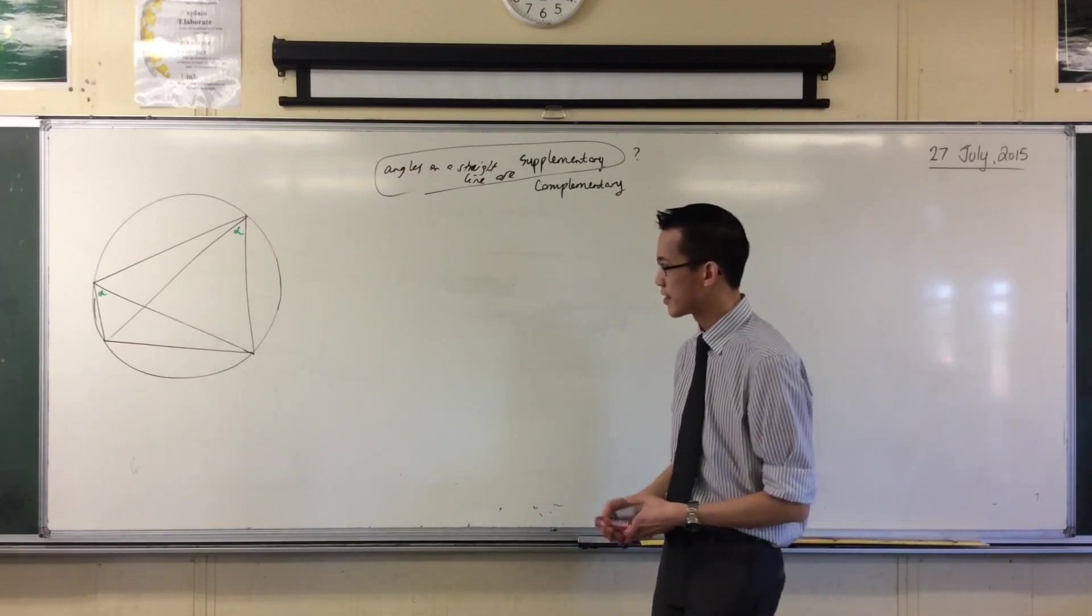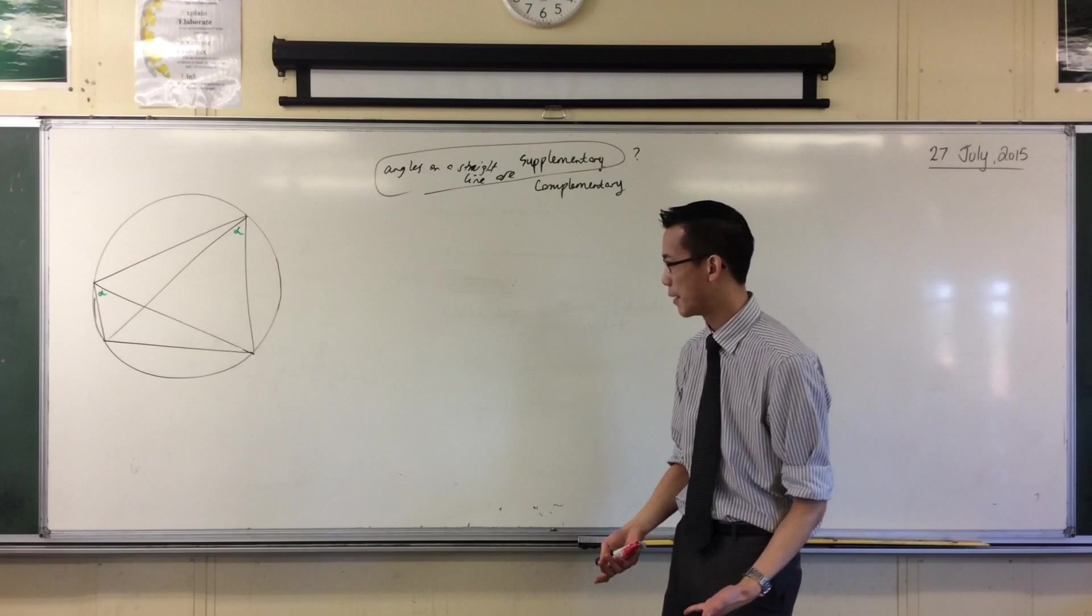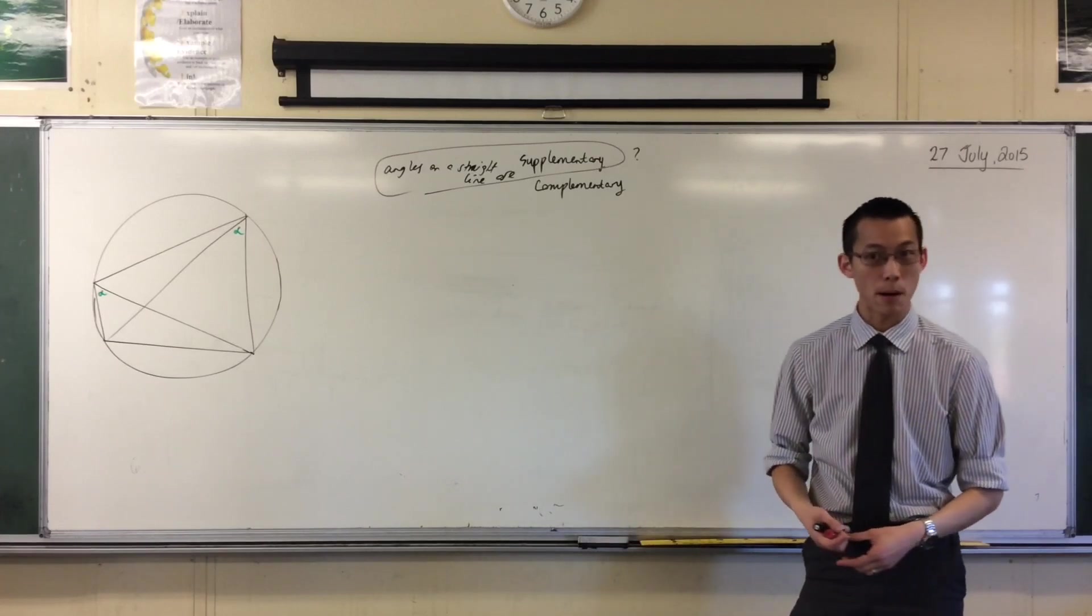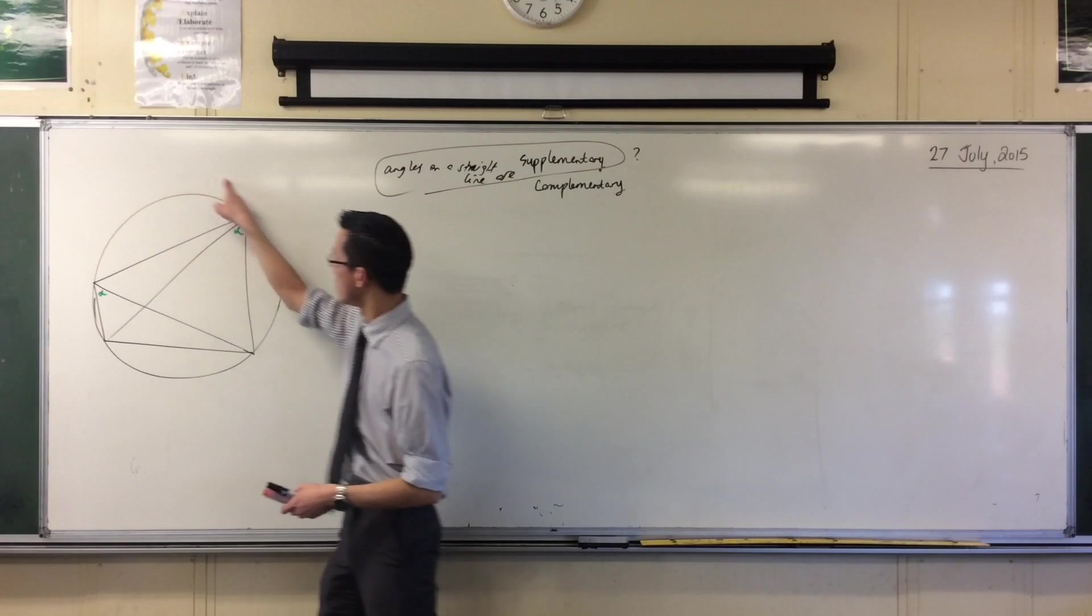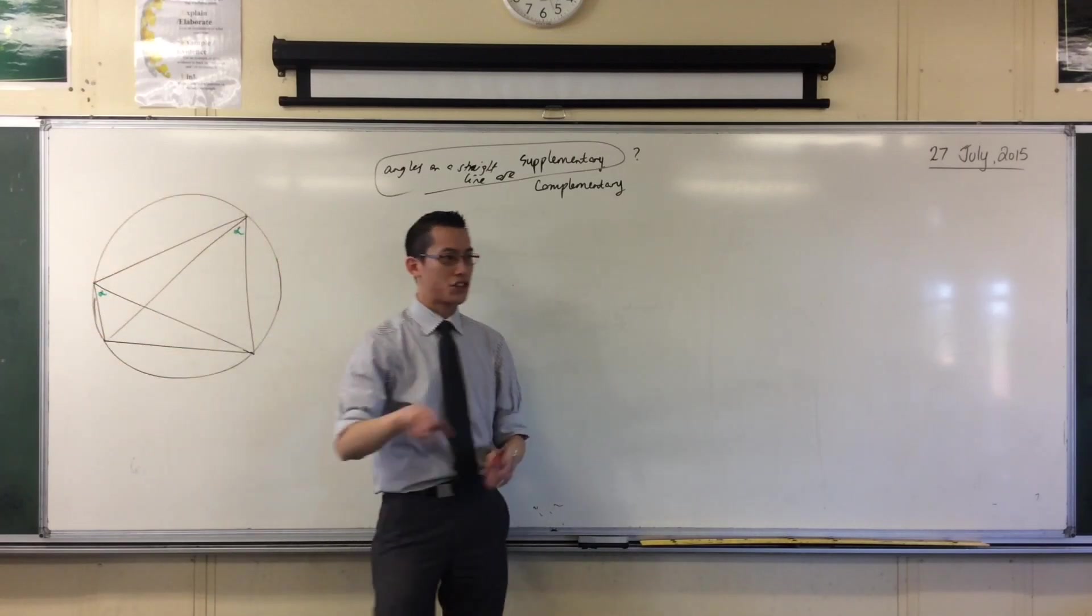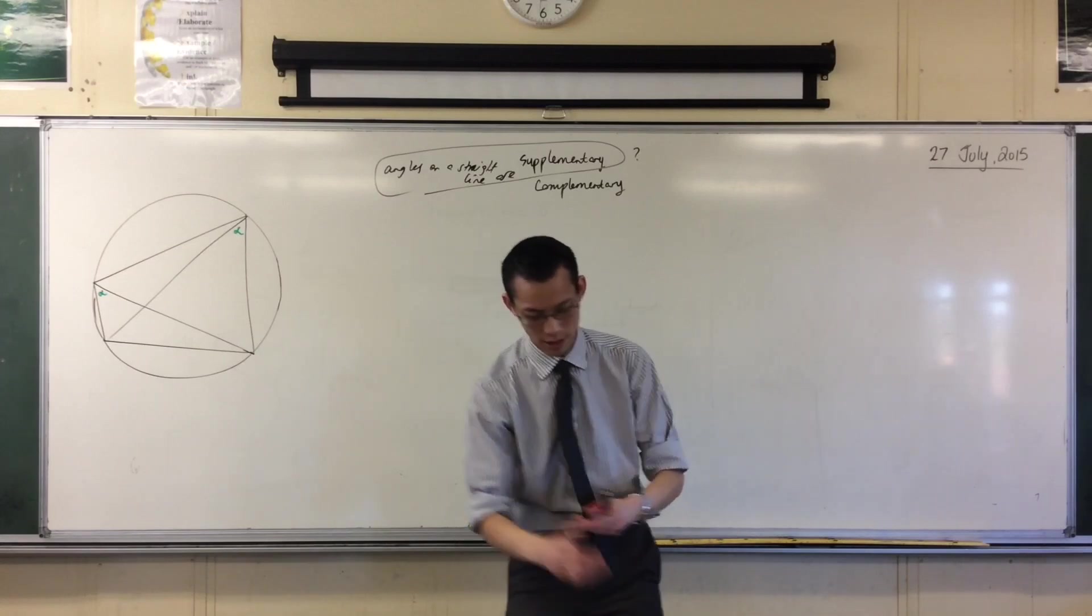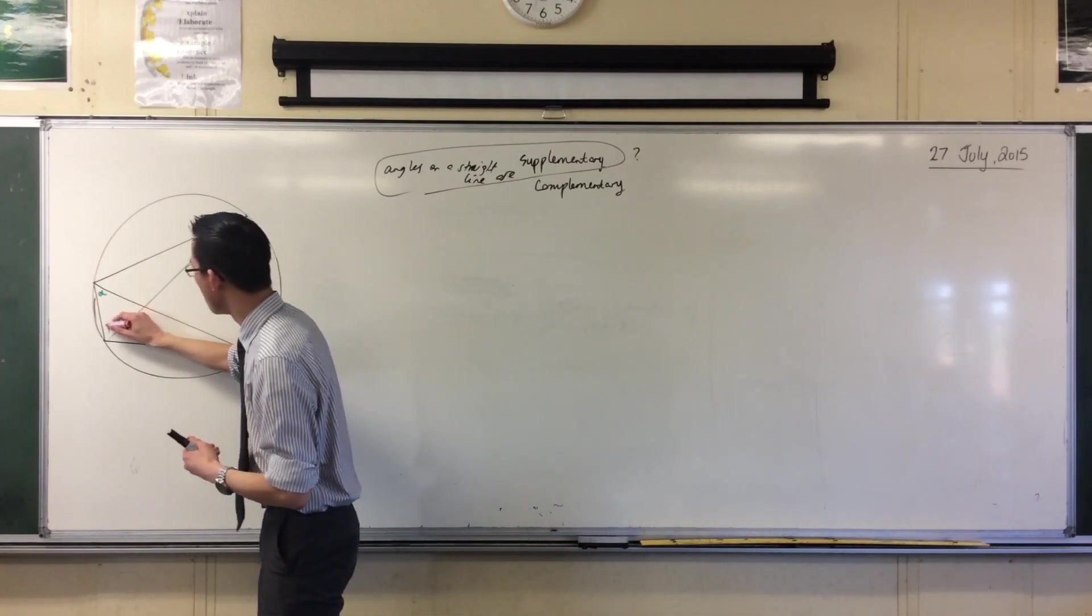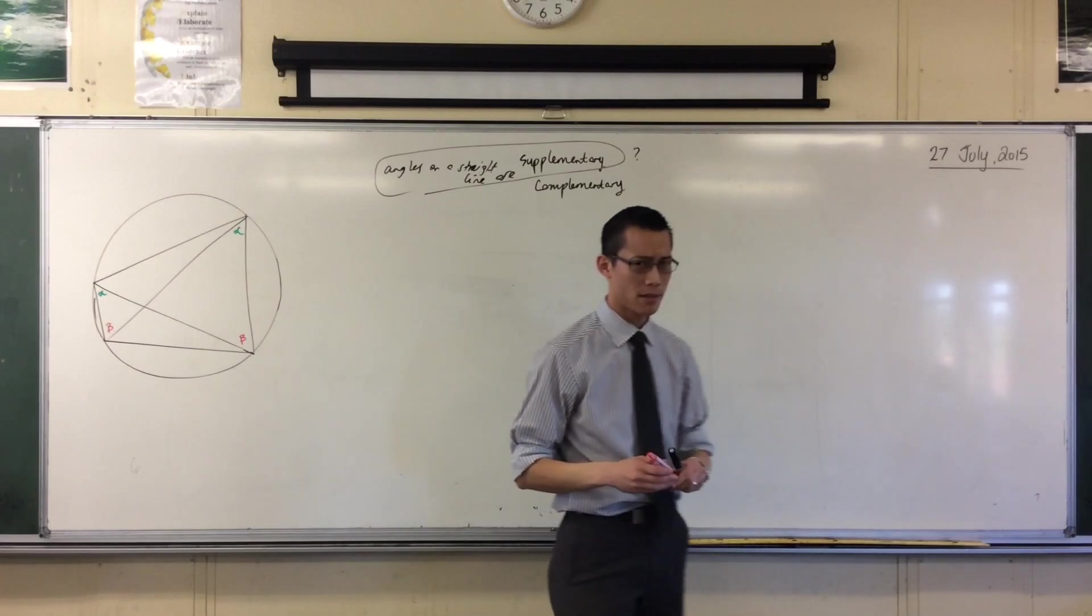Now, once you see that that's alpha and alpha, that doesn't get you very far, but there's loads of other pairs that are exactly the same. For example, if you look at the diagram upside down, and you see okay there's another arc up here, this top arc, which subtends two angles at the bottom, right? Do you see them? So for example, I could call them beta and beta, right?